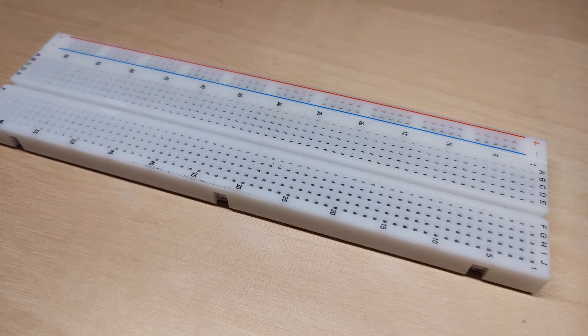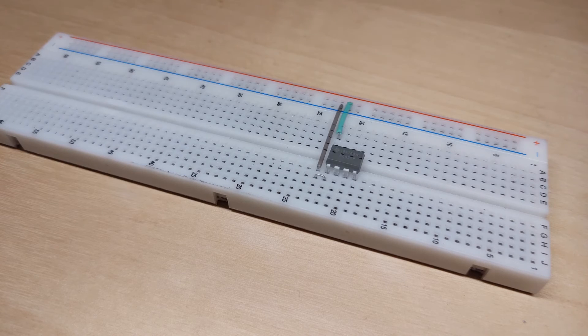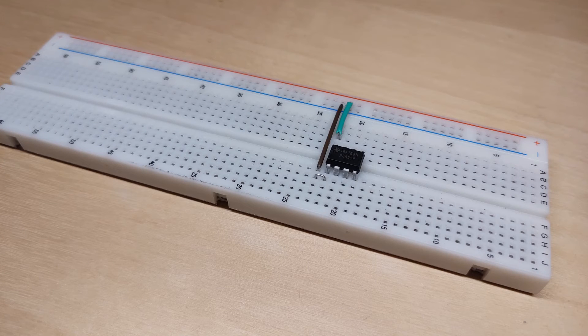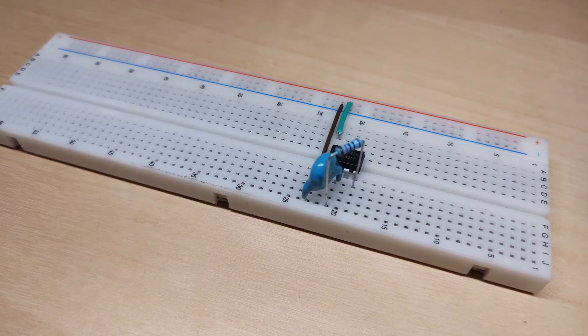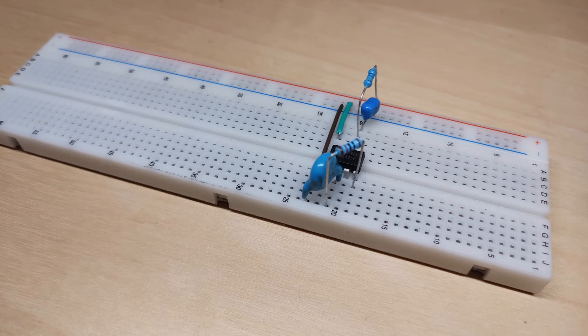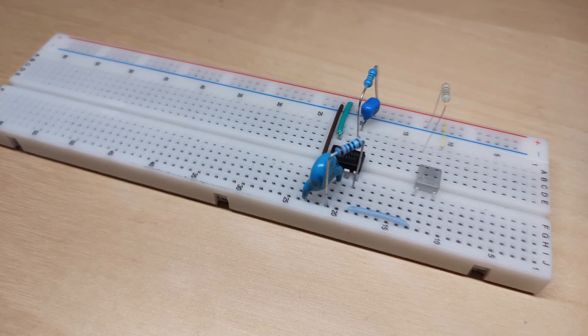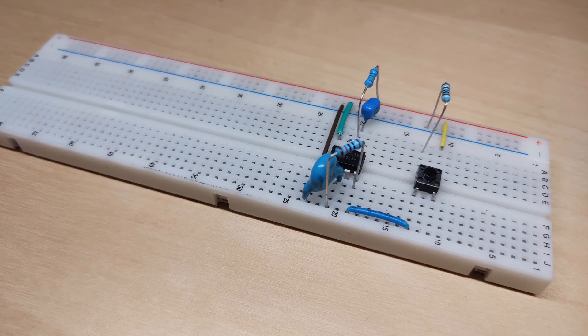All right, now it's time to build this thing. So first thing we do is put the 555 and hook it up to power. Next thing we can attach the first RC circuit on the input side, and after that we put the second RC circuit attached to pin six and seven.